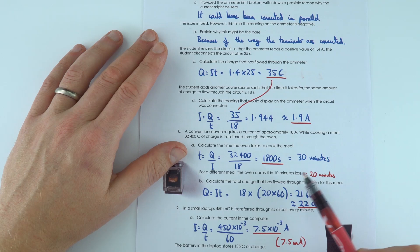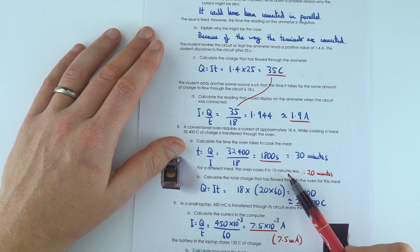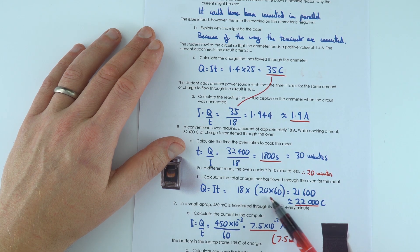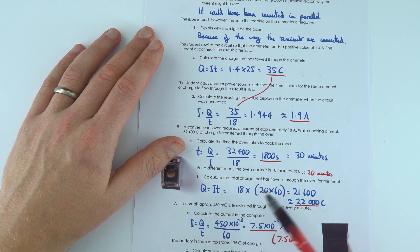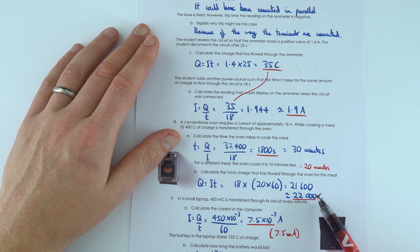For this one over here, we find that the oven takes 10 minutes less. So if it was 30, 10 minutes less than that is going to be 20 minutes. And then 20 minutes times 60 gets into seconds to multiply by the current to find that now the charge transferred is 22,000 coulombs.